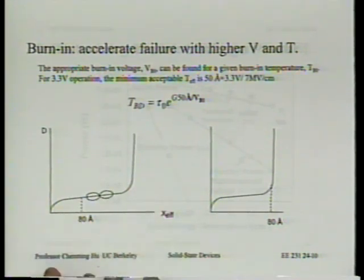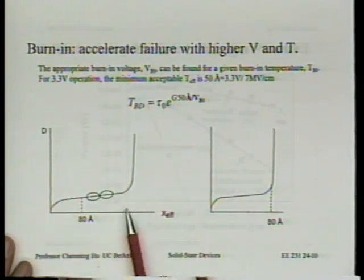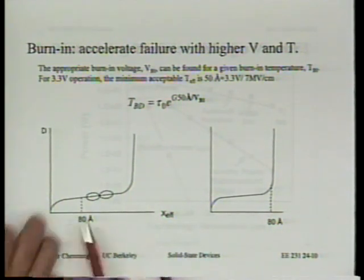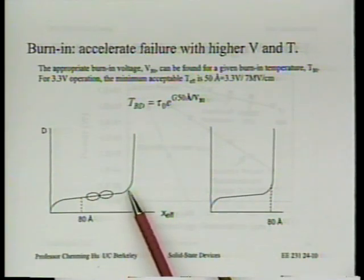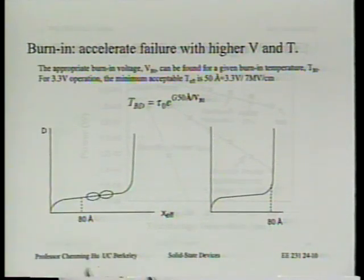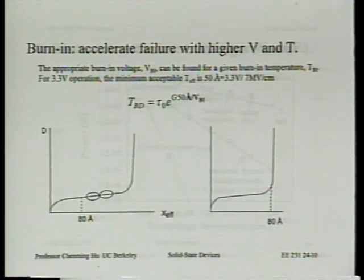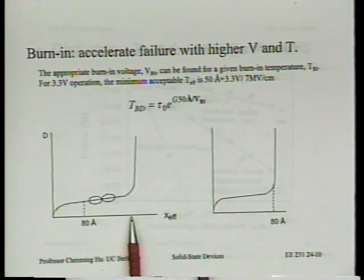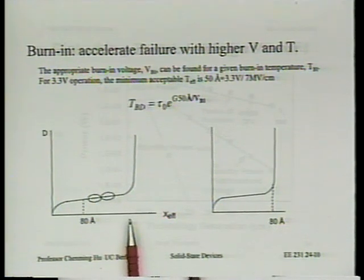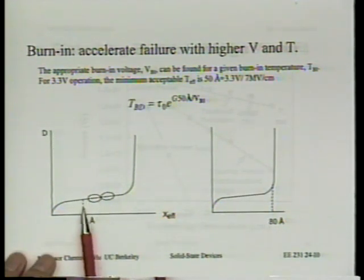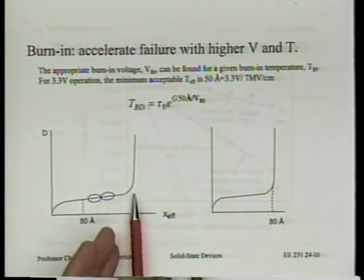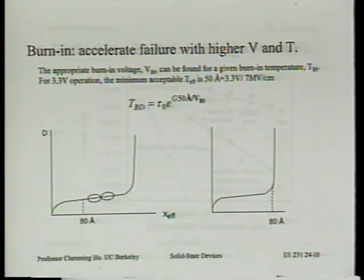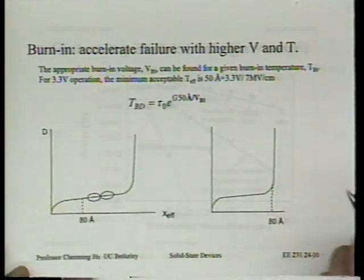Say 80 Angstroms is the minimum t-effective required to meet normal operation for 10 years, but we're actually using 150 Angstroms — then you can do a lot of burn-in without reaching final breakdown. The burn-in question is becoming more relevant as technology scales. For more aggressive future generations, we'll have to carefully evaluate whether burn-in is worthwhile.